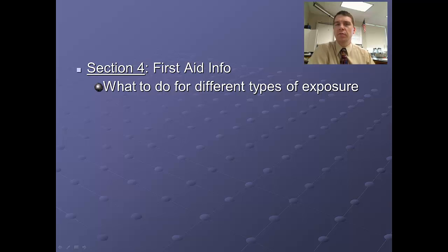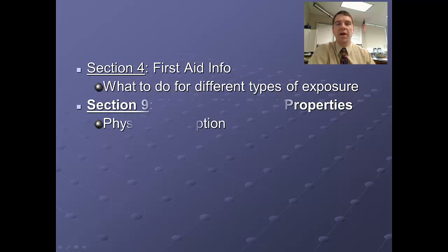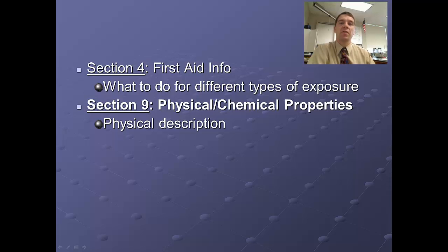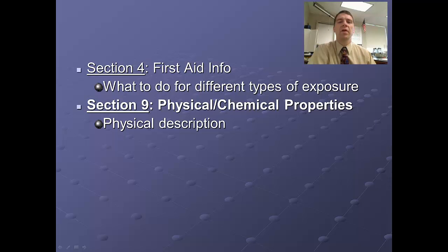The next couple of sections — firefighting measures and similar — mostly apply to first responders and don't pertain to most work done in the chem lab. Section nine is another really important section: it describes the material in terms of its physical and chemical characteristics — what it looks like, what state it's in, whether it has an odor, whether it's colored, what it's soluble in, its density or specific gravity, chemical formula, and molecular weight. This data can be useful in lab calculations.